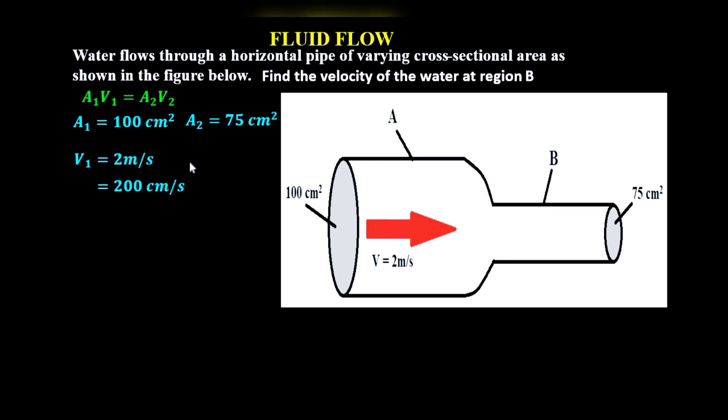Now what you're left with to determine is V2, which is the velocity of water in region B. Doing our substitutions in the equation of continuity, we have for the left-hand side A1 times V1, which is 100 times 200, and that equals A2, which is 75, times V2.